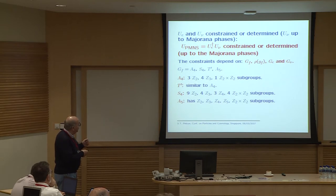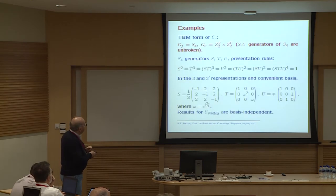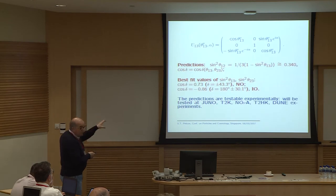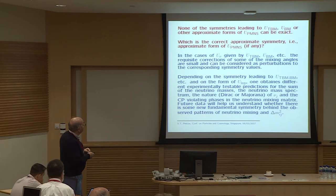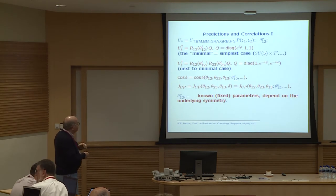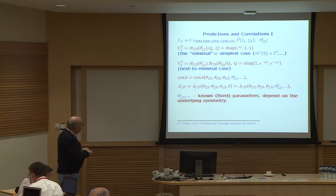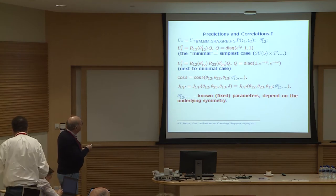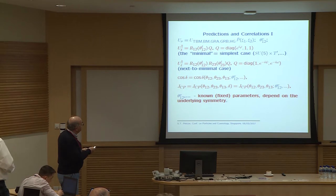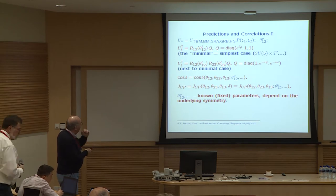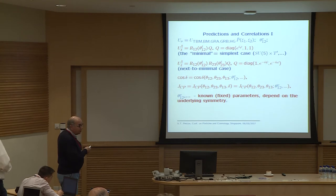Skipping some slides on technical aspects: let's look at predictions and correlations. Suppose the part of the PMNS matrix from the neutrino sector has one of the five symmetry forms, and is corrected by a rotation matrix in the 1-2 plane from the charged lepton sector. If we include a product of two rotations in the 1-2 and 2-3 planes, it can be shown that the cosine of the Dirac phase satisfies a sum rule expressed in terms of the three neutrino mixing angles and the symmetry parameter characterizing the underlying symmetry of the PMNS matrix.